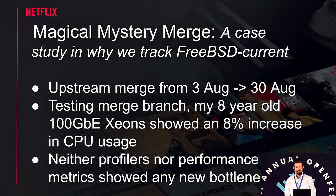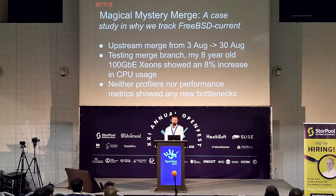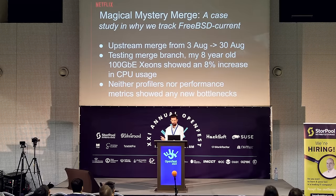Now here's the title of the talk — and this is basically why we run FreeBSD Current. We did an upstream merge in August, and it started out as a very easy merge with almost no conflicts — only two merge conflicts. Everything looked great. Then I went to test it on my original 100 gig machine, which I test every merge for performance. I noticed that CPU usage had increased by roughly 20%. I did everything I normally do when looking for performance problems — checked for hot functions, looked for lock contention — and spent a long time going over profilers, but I just couldn't figure out why CPU usage had gotten so high.